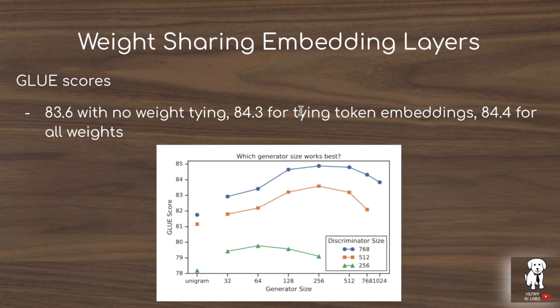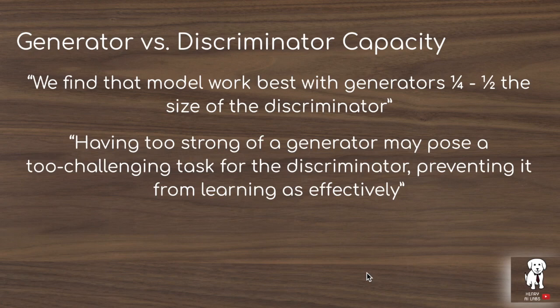The authors explore the capacity relationship between generator and discriminator, finding the model works best when the generator is a quarter to half the size of the discriminator. Having too strong a generator makes the task too challenging — if the generator perfectly replaces masked tokens, the discriminator can't learn anything meaningful. For this reason, the generator is a lower capacity language model, since some error in the generator is necessary to provide a learnable signal for the discriminator.